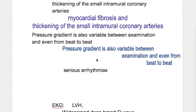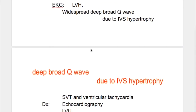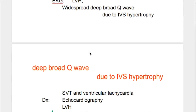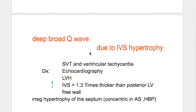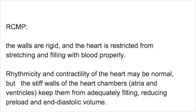On EKG in hypertrophic cardiomyopathy, there is left ventricular hypertrophy and widespread deep Q waves. These deep Q waves are due to intraventricular septal hypertrophy. Restrictive cardiomyopathy is the condition where the walls are rigid and stiff, but the rhythmicity and contractility of the heart may be normal.